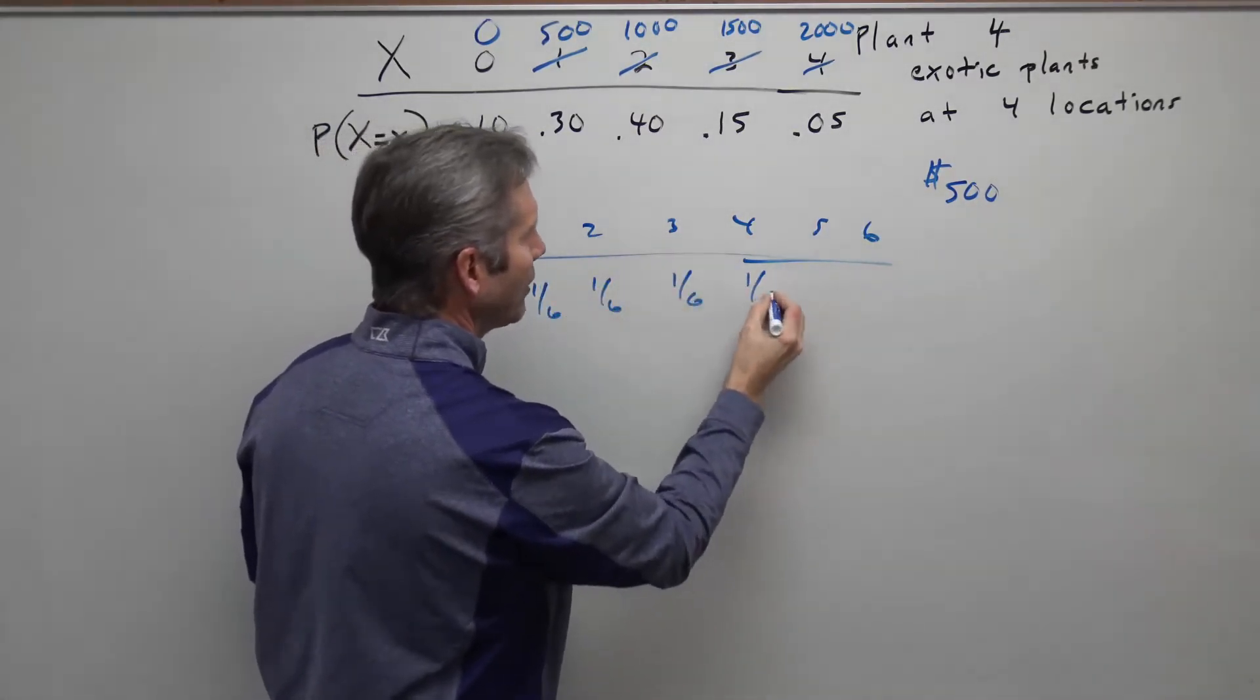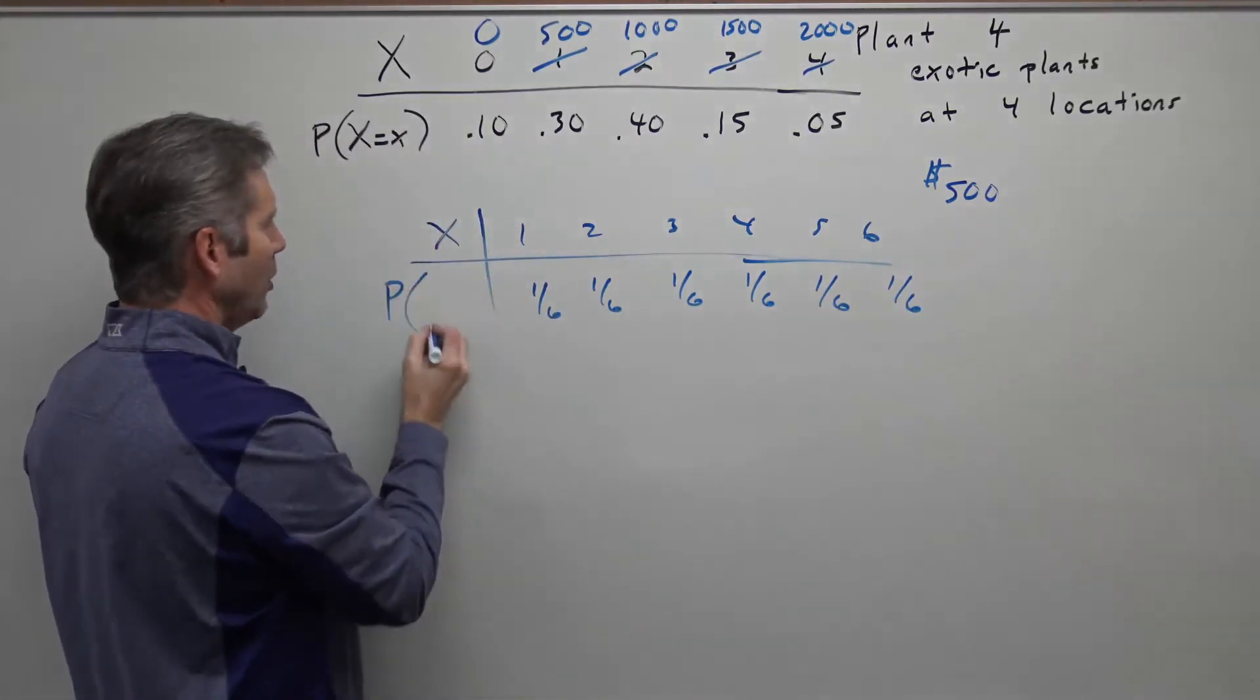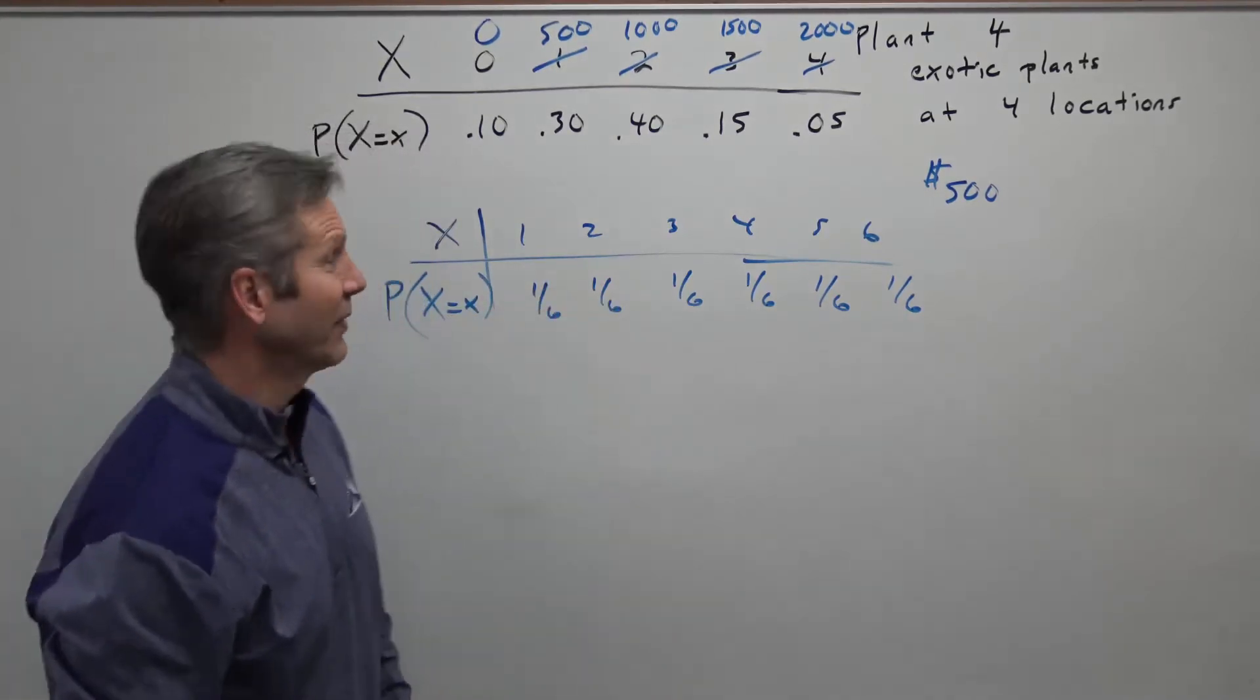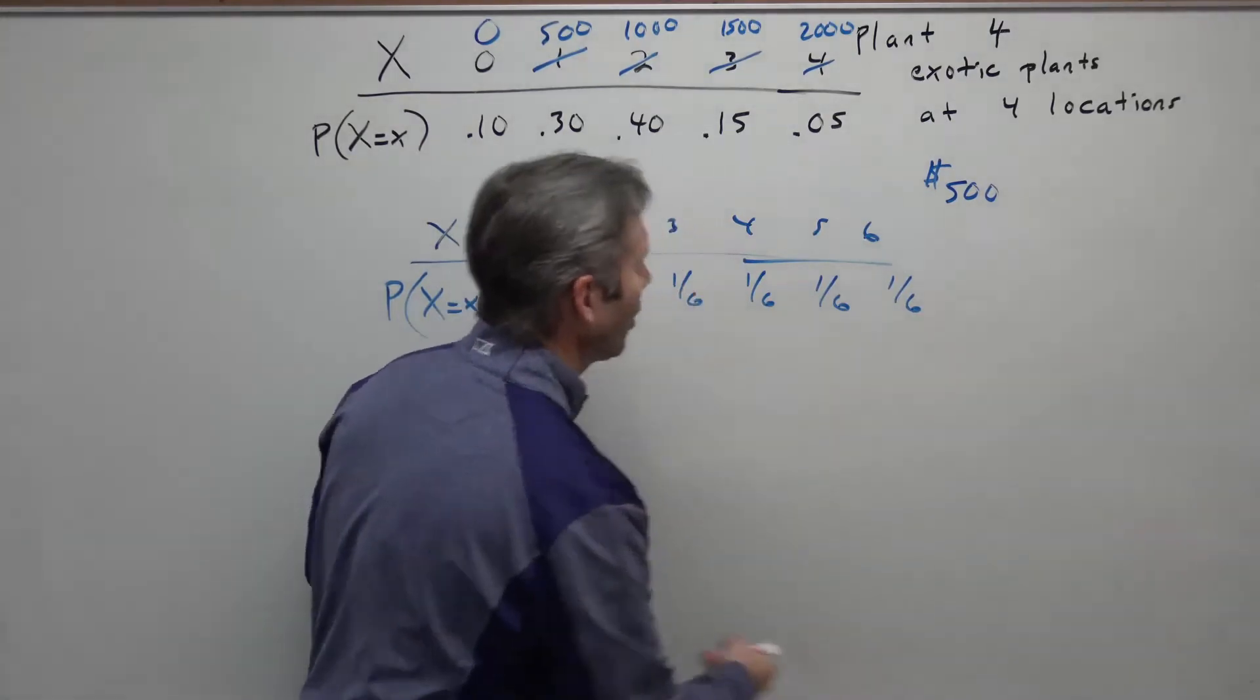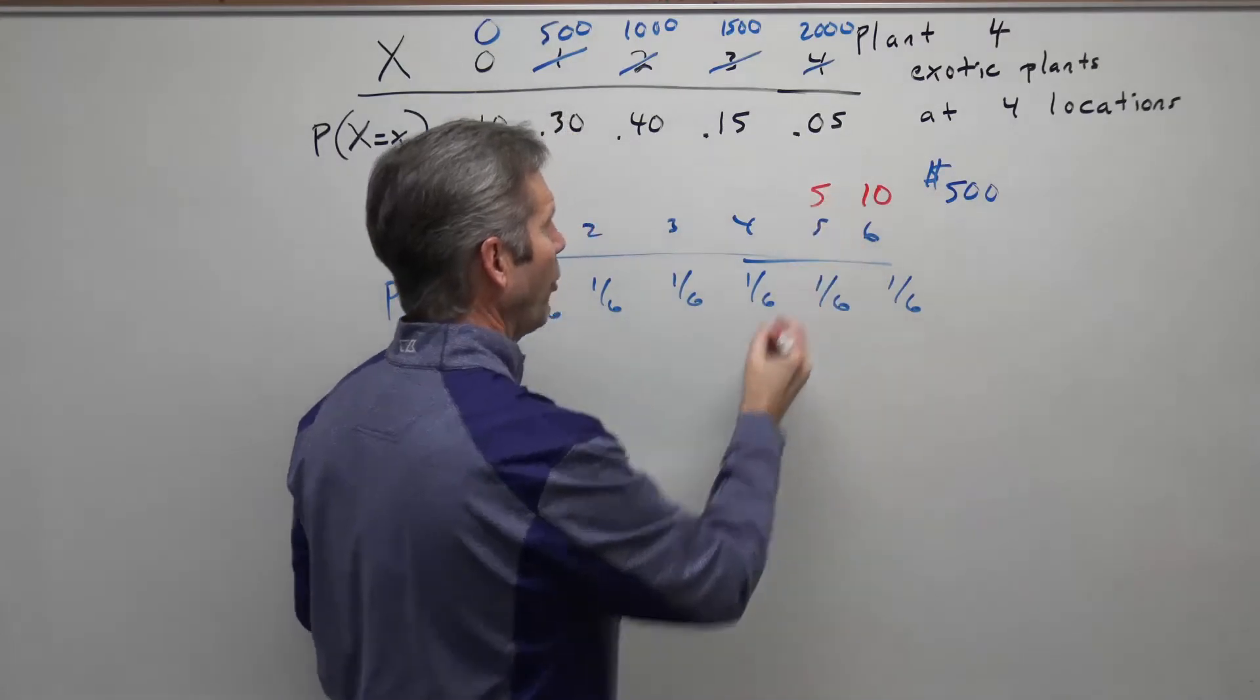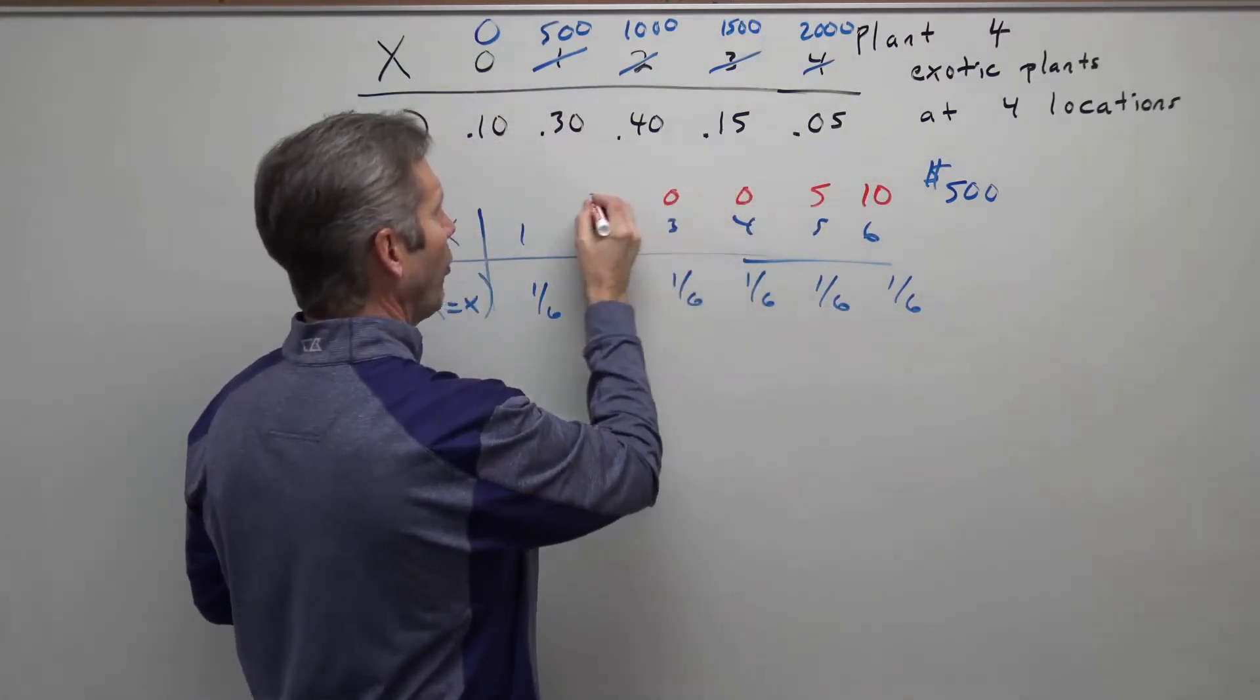This would be the probability distribution for the number rolled on a particular die. But what if instead we played a game where if you roll a 6, you get 10 points, if you roll a 5, you get 5 points, and if you roll anything other than that, you get 0 points.